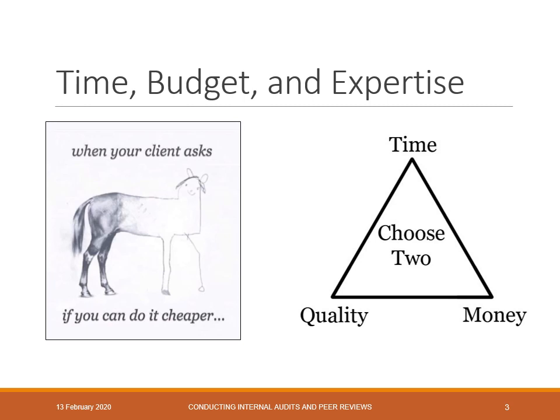I mentioned time, budget, expertise — throw in resources as well. I always love this triangle diagram of time, quality, and cost — you can pick two and figure out where you are within that. One way to improve quality at a relatively low cost and without a huge time constraint is by bringing in a peer review.